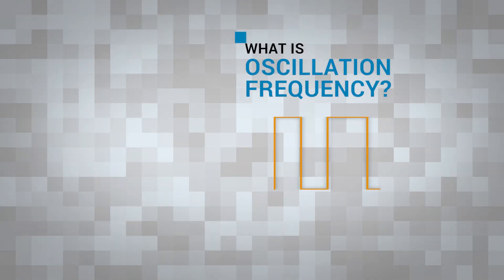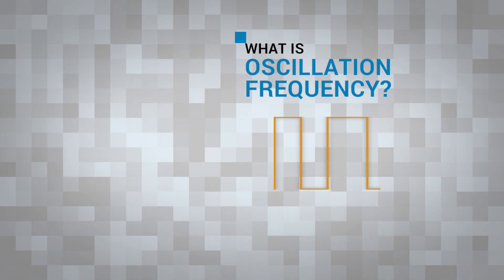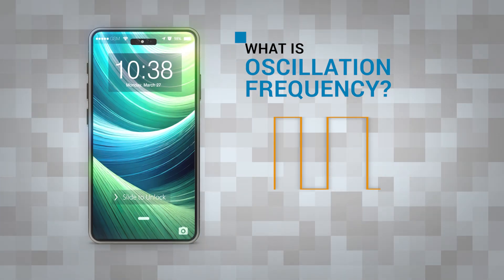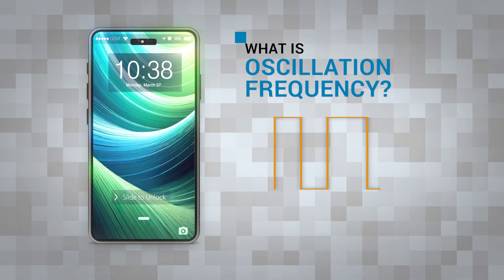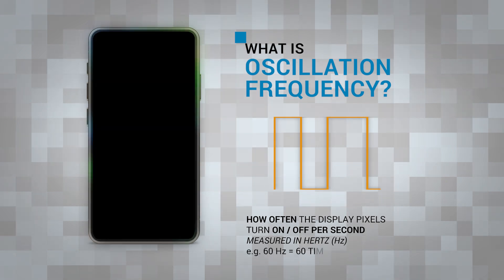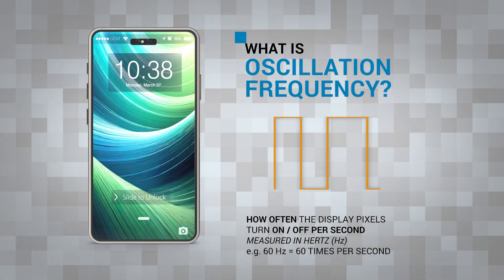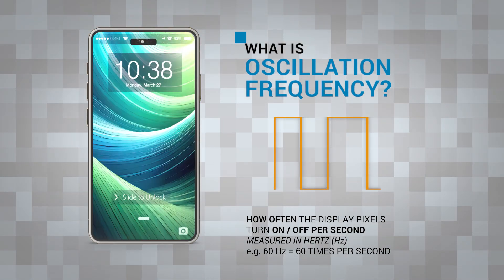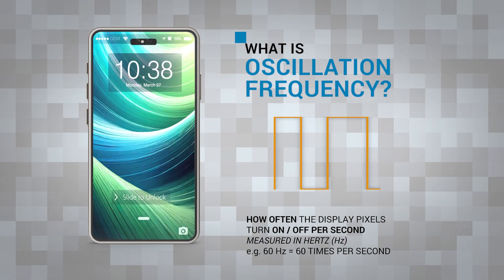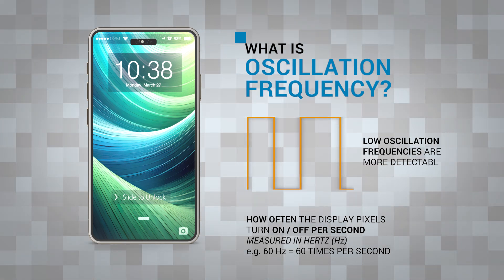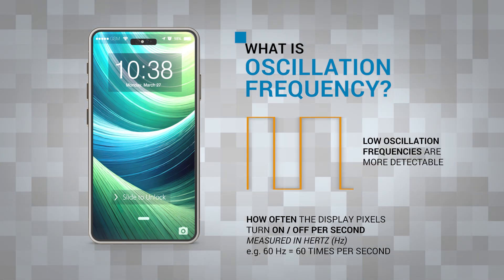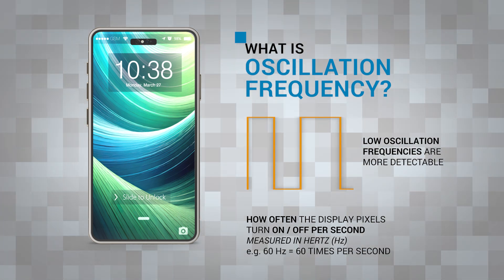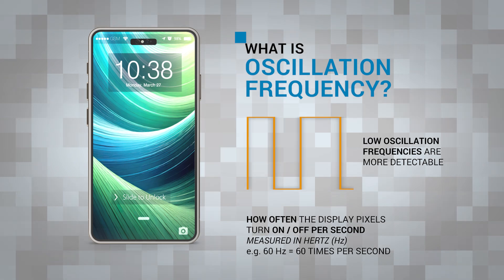Let's start with the concept of oscillation frequency. In the context of smartphone displays, the oscillation frequency usually refers to how often the display's backlight or pixels are turned on and off per second, and is measured in hertz. If we have a low oscillation frequency, for example 60 Hz, the on and off cycles are slow enough for some to detect these changes.